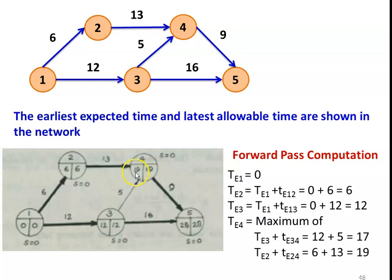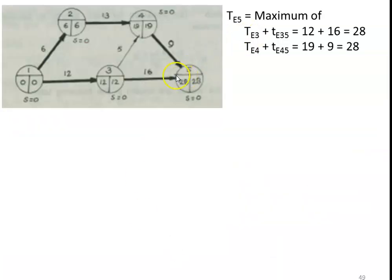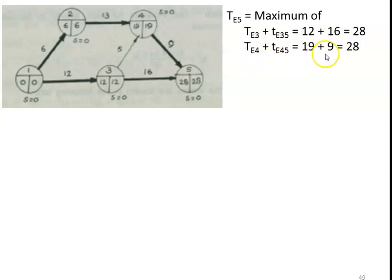So TE4 = 19. For the fifth event, there are again two incoming arrows: TE5 = maximum of (TE3 + t(3,5)) = 12 + 16 = 28, and (TE4 + t(4,5)) = 19 + 9 = 28. Both values are 28, so the earliest expected time for event 5 is 28.